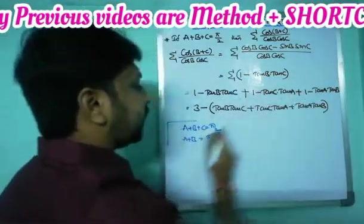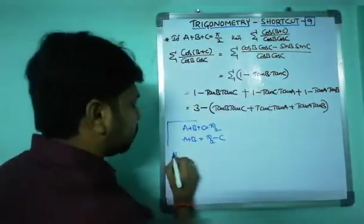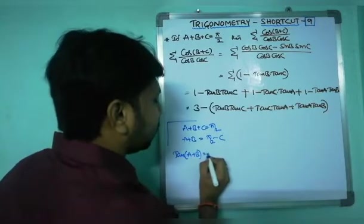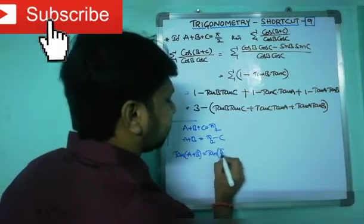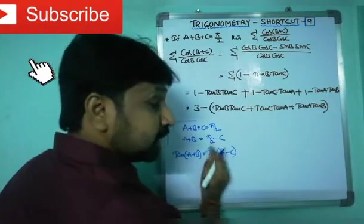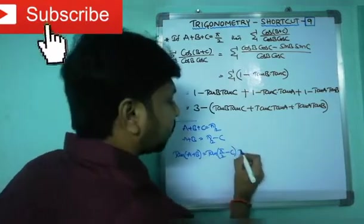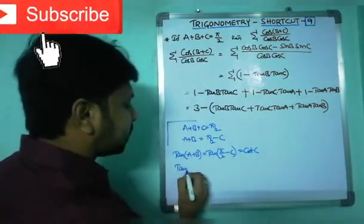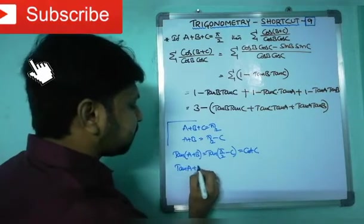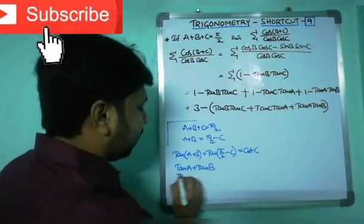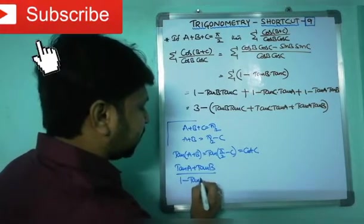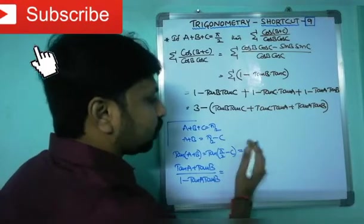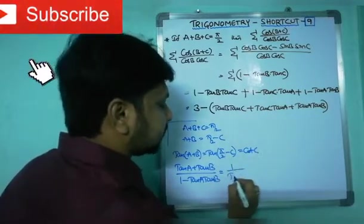This expression is in terms of tan, so I want to apply tan to both sides. Therefore tan(a+b) equals tan(90° minus c). Tan(90° minus θ) is cot θ, so this equals cot c. Using the tan addition formula: (tan a + tan b)/(1 minus tan a · tan b) equals cot c, which can be written as 1/tan c.